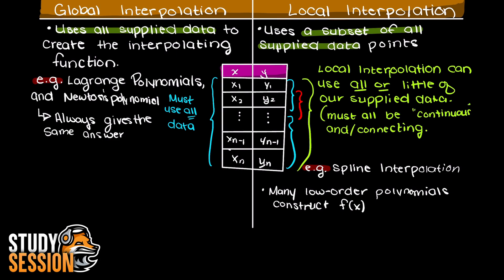Therefore you can think of a local interpolation method as finding many different small-order polynomials, whereas a global interpolation method will often result in a very high-order polynomial as all data points must be implemented into our interpolation polynomial.